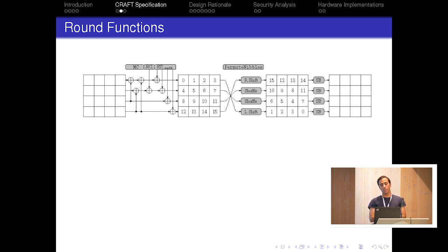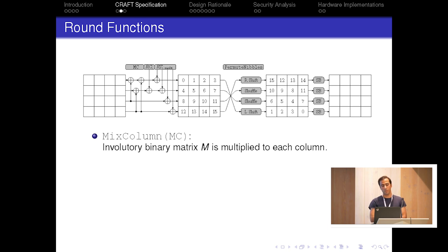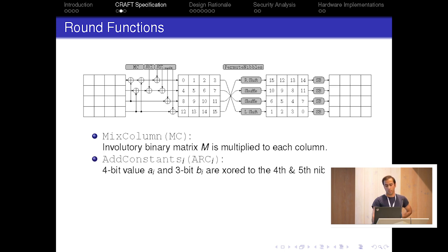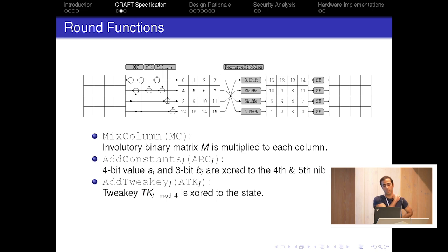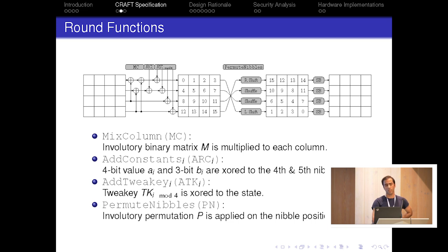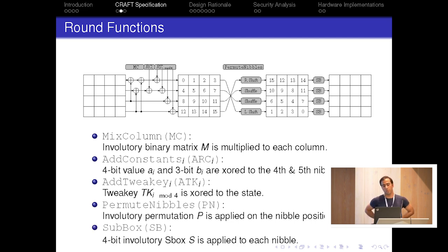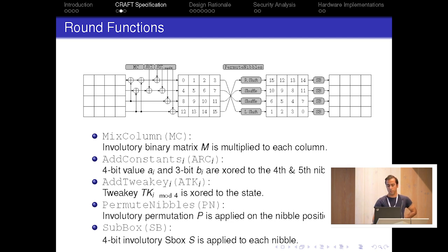There are five operations in each round and all of them are involutions. It starts with MixColumn, where a binary matrix M is multiplied to each column. Then round constants are absorbed into only the fourth and fifth nibbles of the state. Then the round key is XORed into all of the state. The last linear operation is nibble permutation P, which changes the position of nibbles in the state. The round ends with a non-linear S-box layer applied to each nibble.